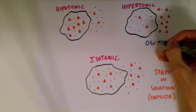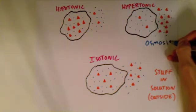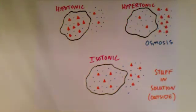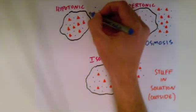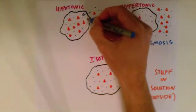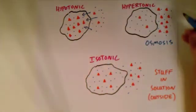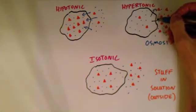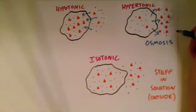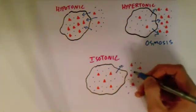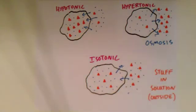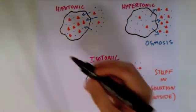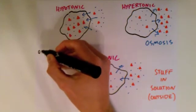We're going to look at how osmosis will take place in each of these situations. In the hypotonic environment, the water is going to move into the cell to balance the ratio of stuff to water. In the hypertonic, the water is going to naturally move out of the cell. In the isotonic, the water will flow freely back and forth in equal amounts, just maintaining that homeostasis, the balance between the inside and the outside.